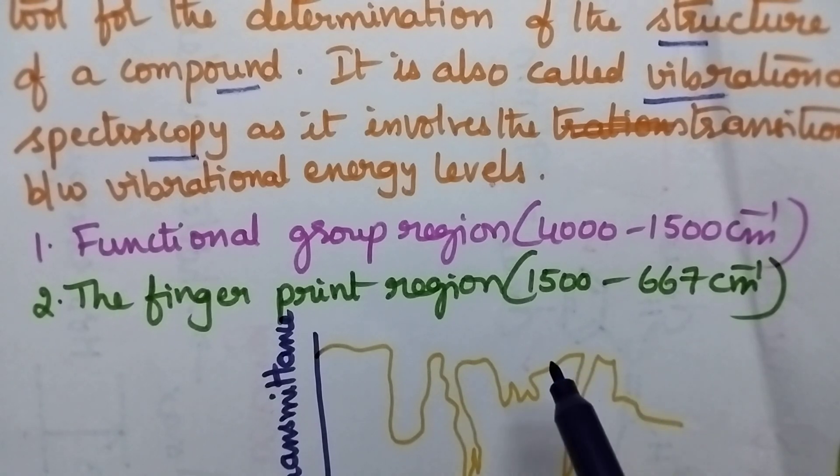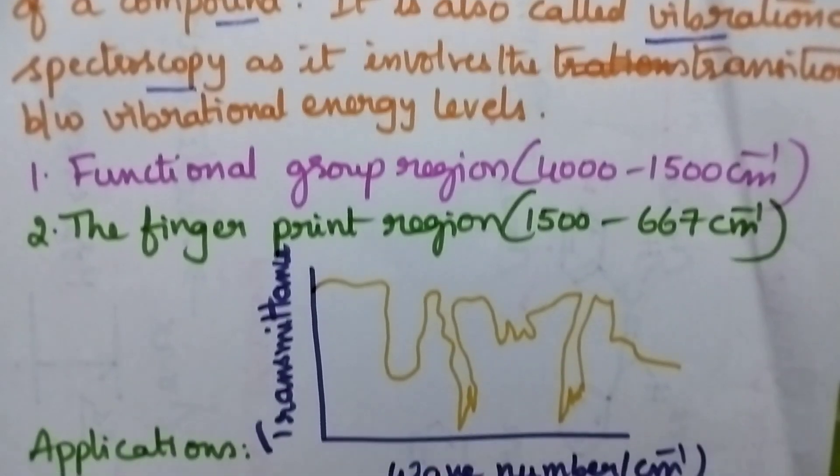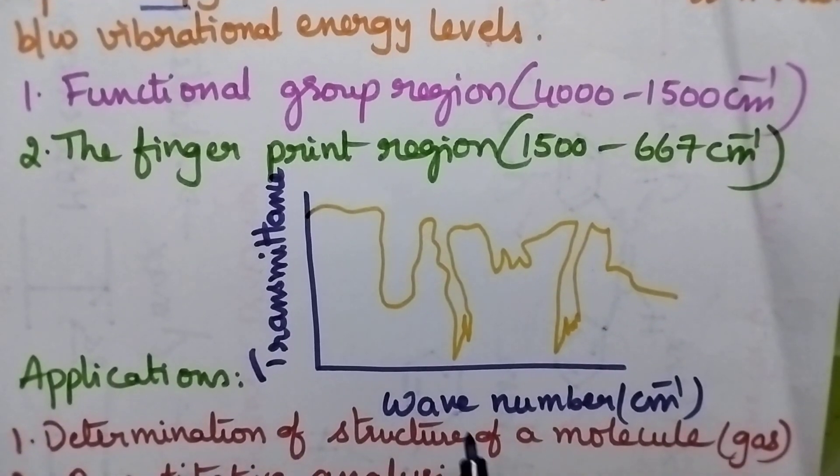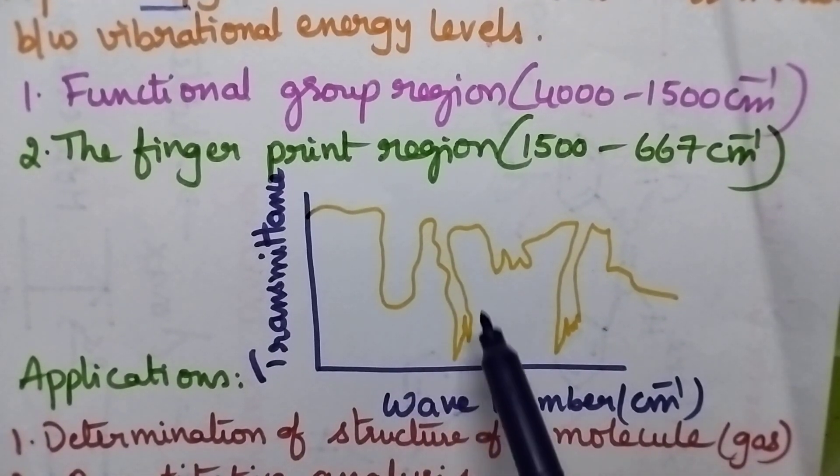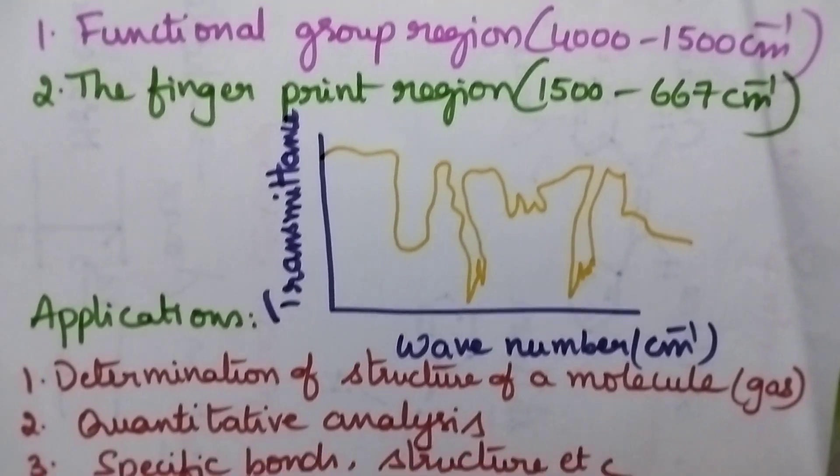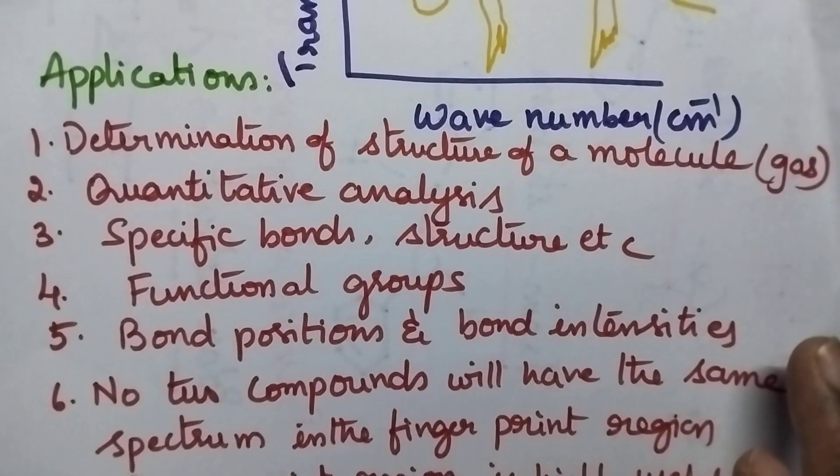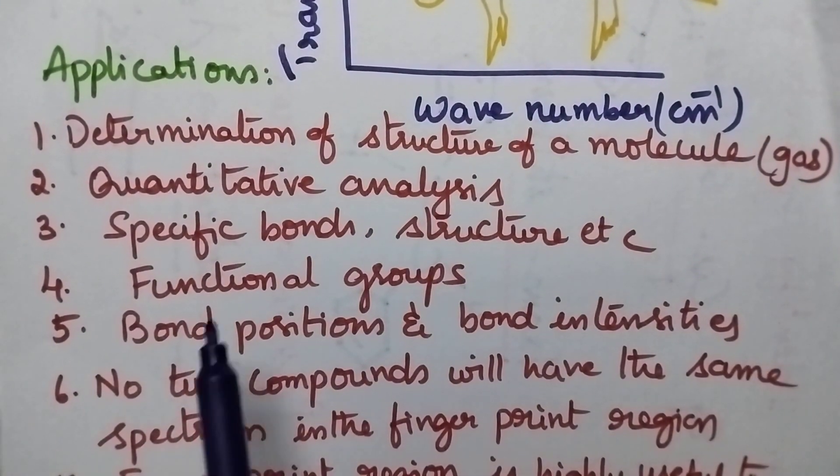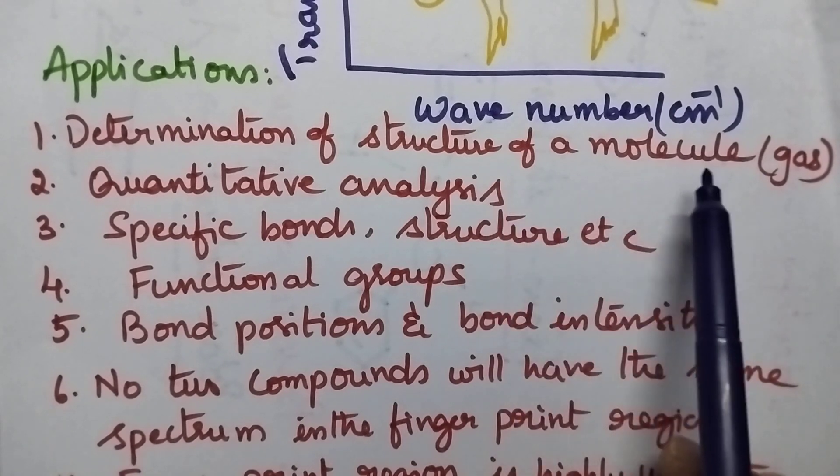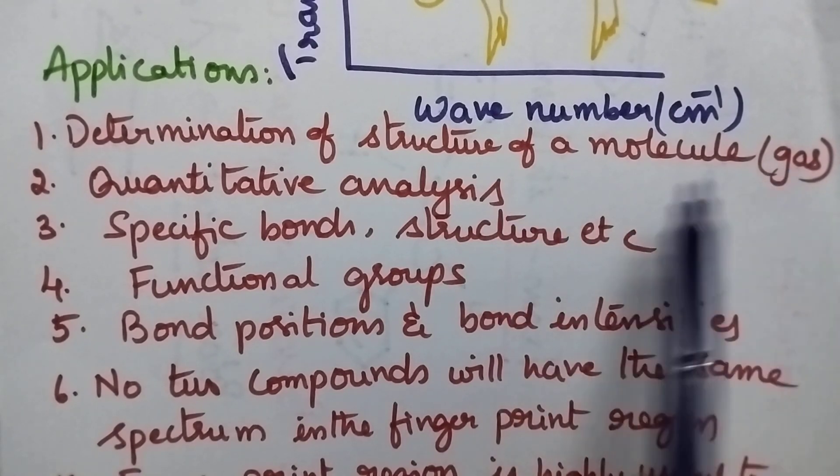In the IR region, a graph will be drawn between the wave number and the transmittance. It always gives inverted sharp peaks. Coming to the applications, IR spectroscopy is highly useful to determine the structure of the molecule present in the gaseous state.